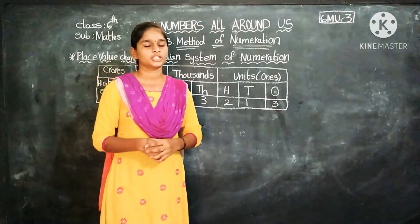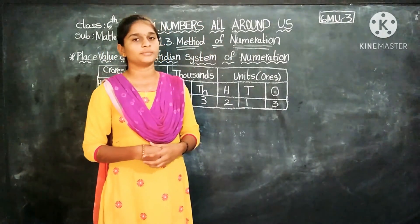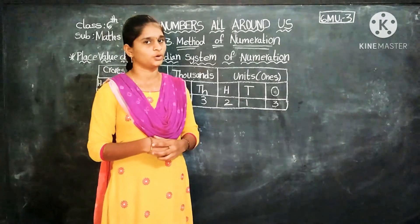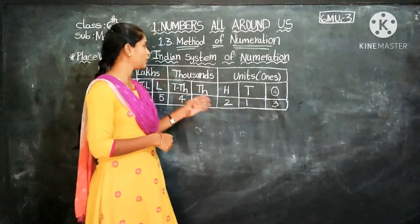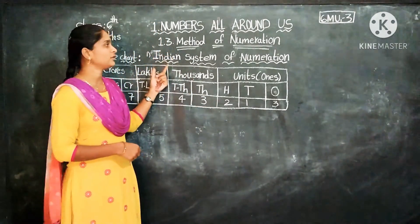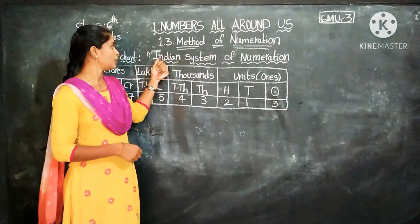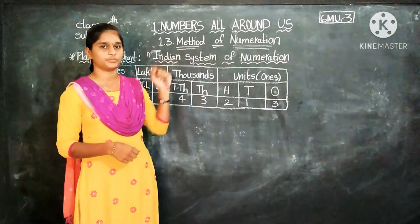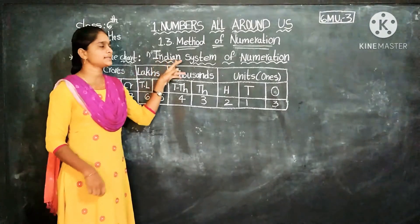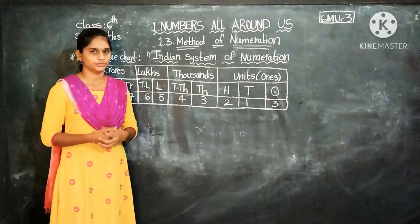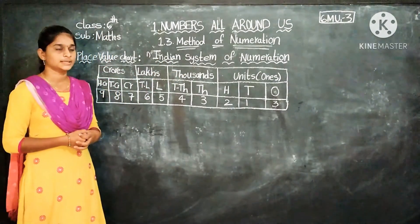Children, we have already done the 1.1 exercise. Now we discuss about 1.3 Method of Numeration. The first one is the Indian system of numeration.